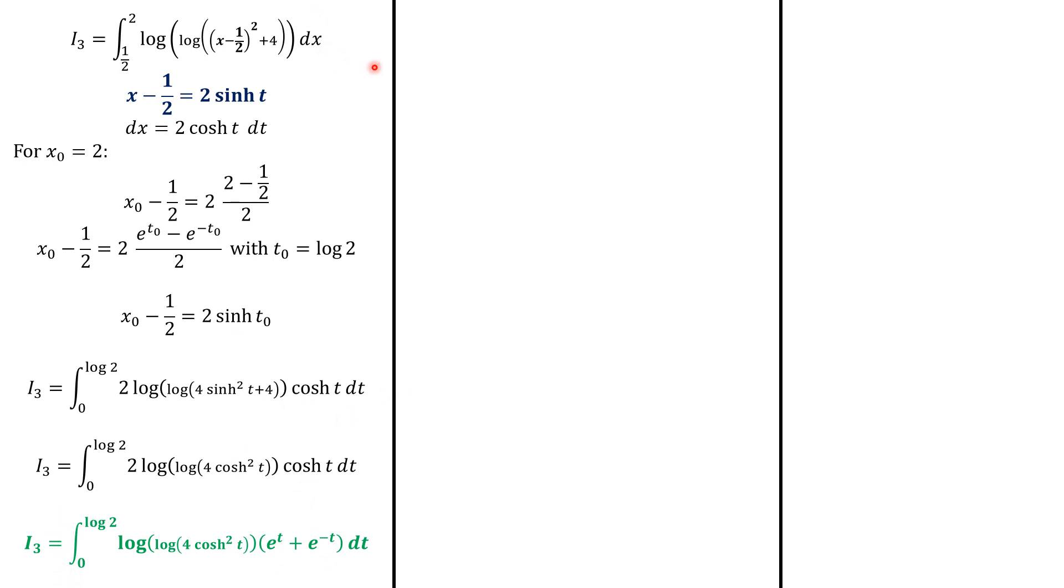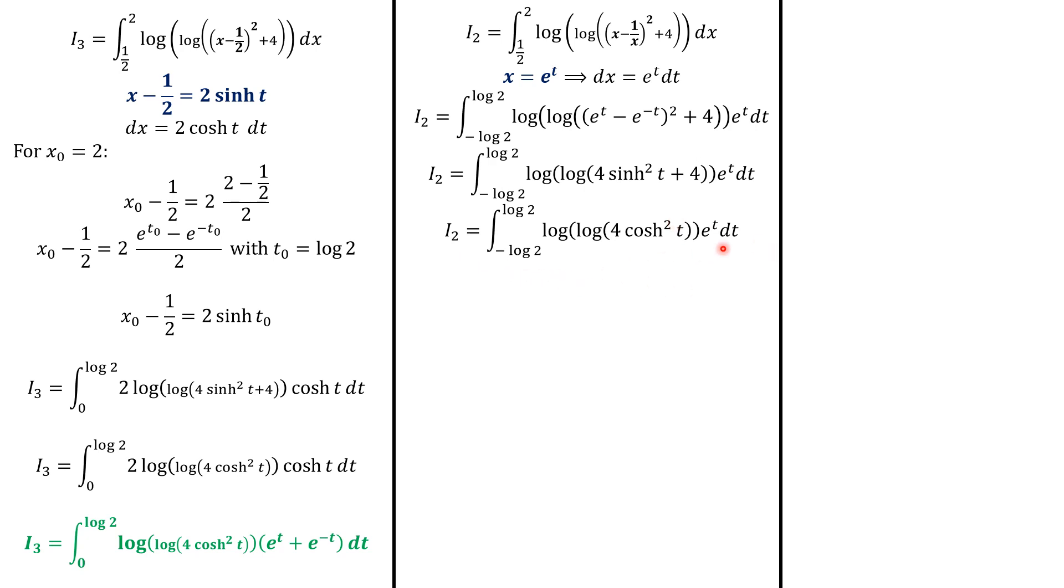And then I3 is equal to the integral from 0 to log 2 of this function. Now, 2 times cosh t dt is dx. And we have replaced x minus 1 over 2 by 2 times sinh of t. So this is 4 times sinh squared t plus 4. But we know that sinh squared plus 1 equals cosh squared. That's what we have next. And at the end, we replace 2 times cosh t by e to t plus e to negative t. So this is I3.